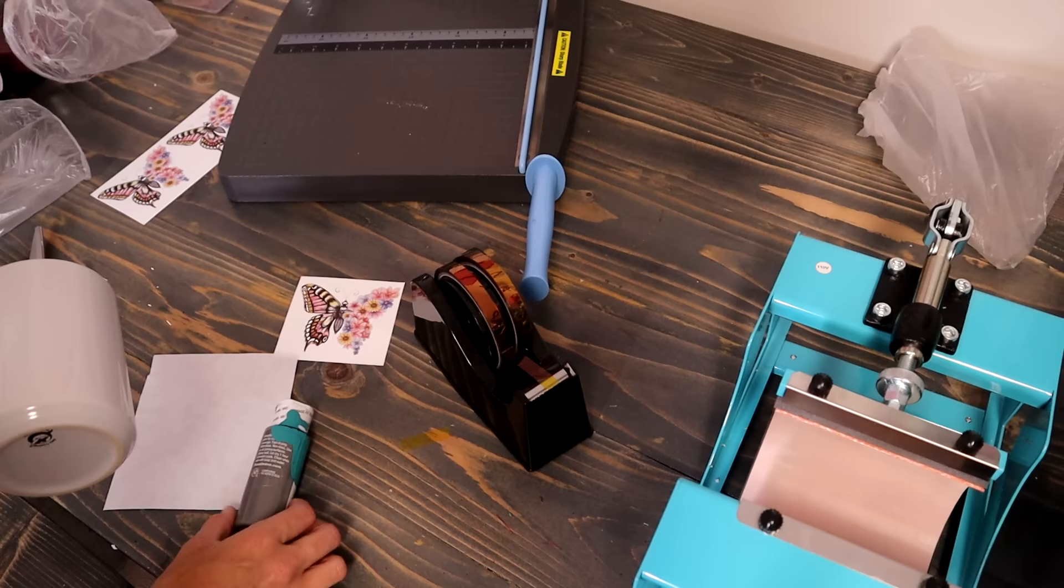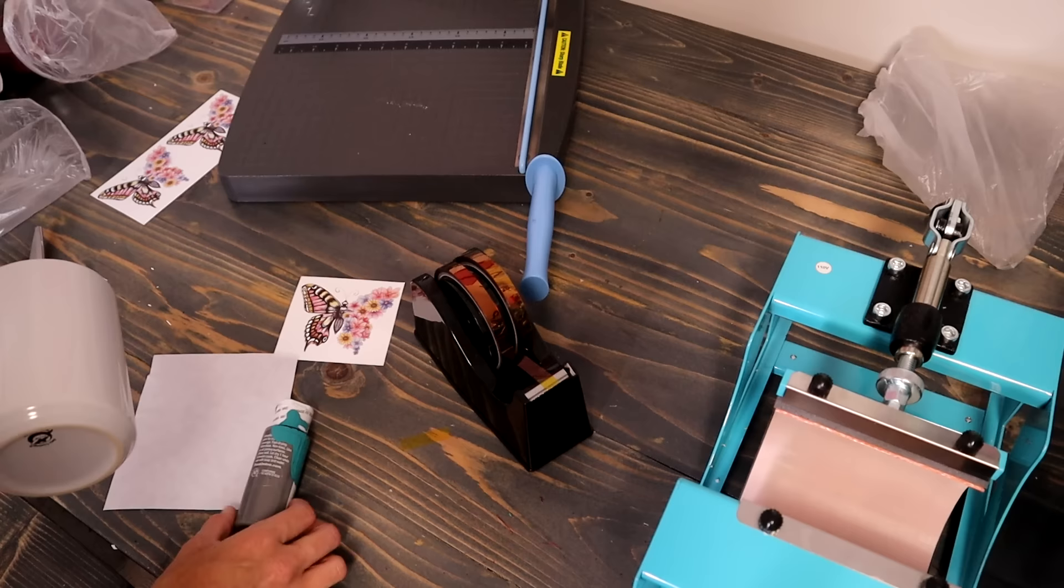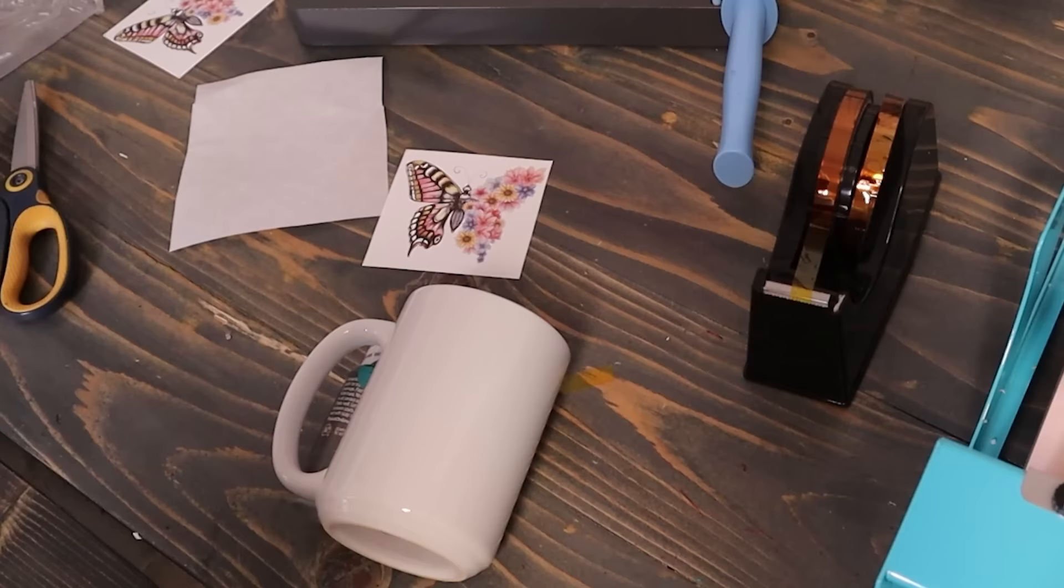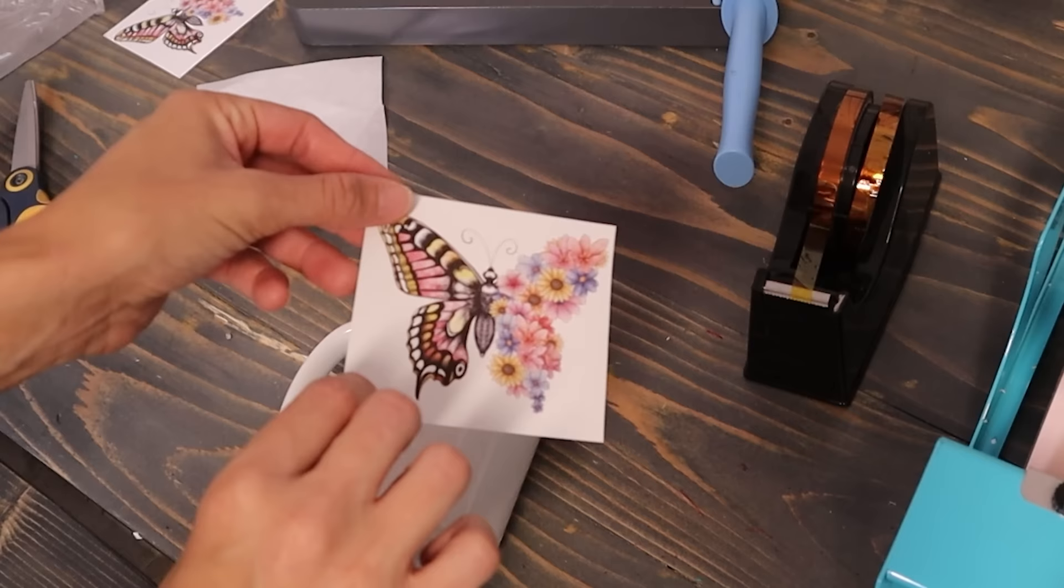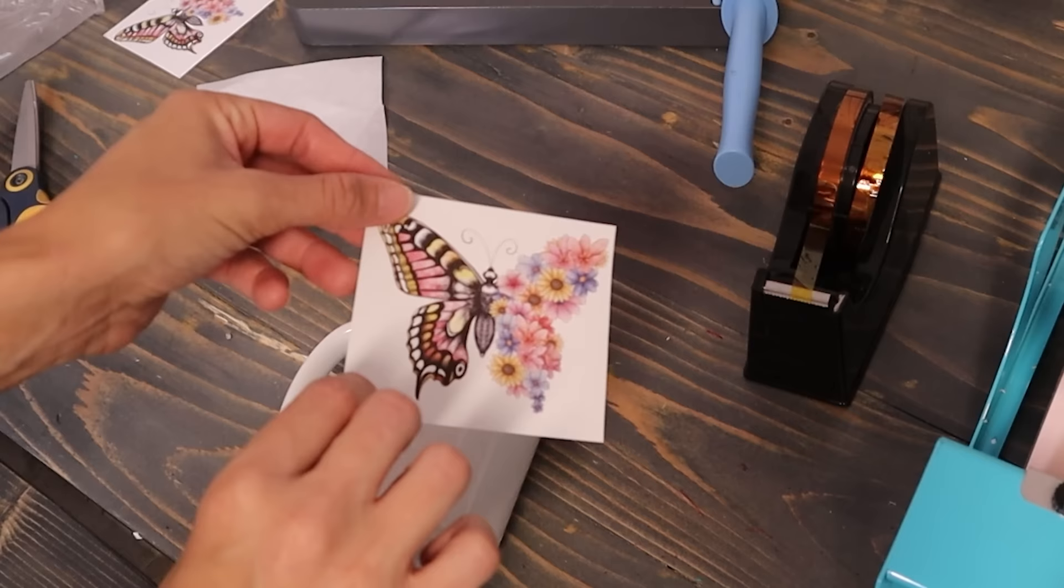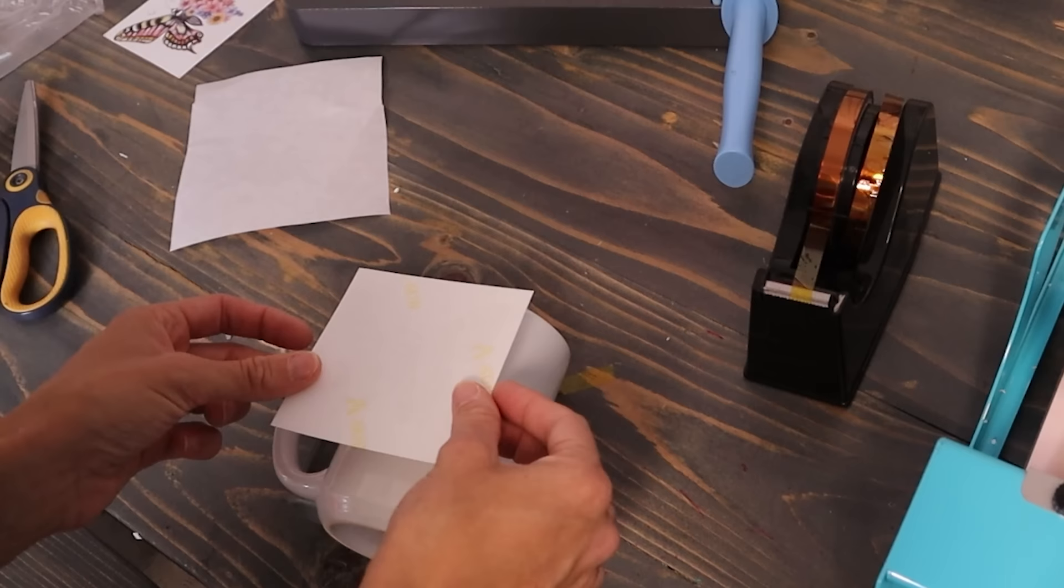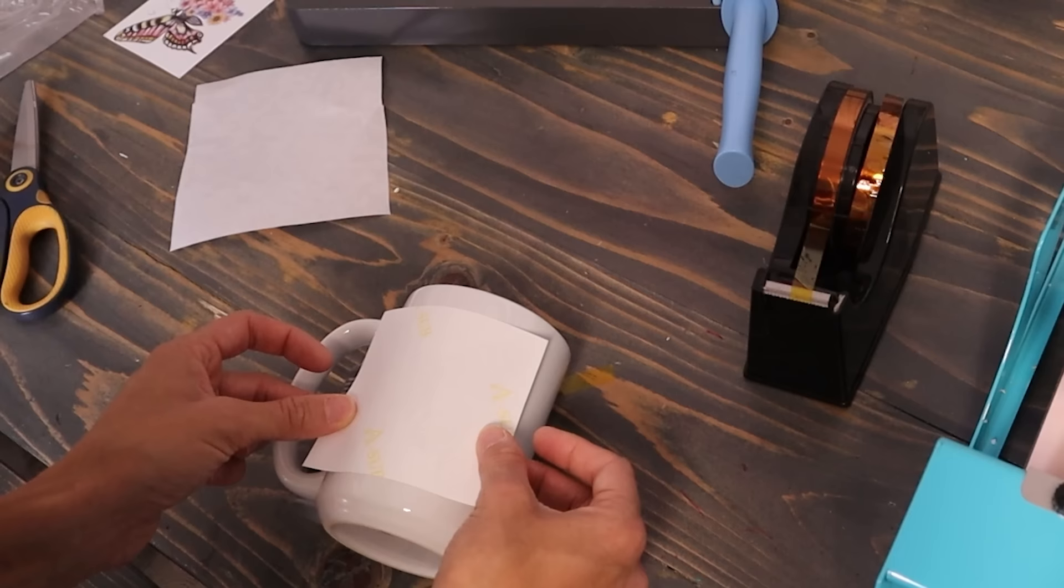Something I like to do when I'm working with mugs is put a paint tube behind the handle and it keeps your mug straight for you so you can apply your design in a straight way. Okay, then you're going to want to take your design and put it face down on your mug. Just make sure you don't have it upside down because these mugs aren't cheap to mess up, so just try and get it as centered and as good as you can.